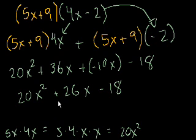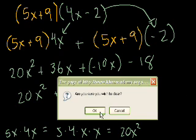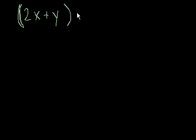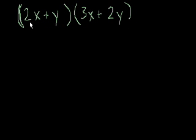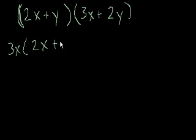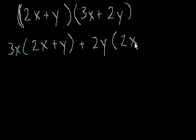There, we're done. Let's do another problem. Let's do 2x plus y times 3x plus 2y. Well, once again, this is the same thing as, and we could just do it a little different way, in a little different order. We could say this is 3x times 2x plus y plus 2y times 2x plus y.